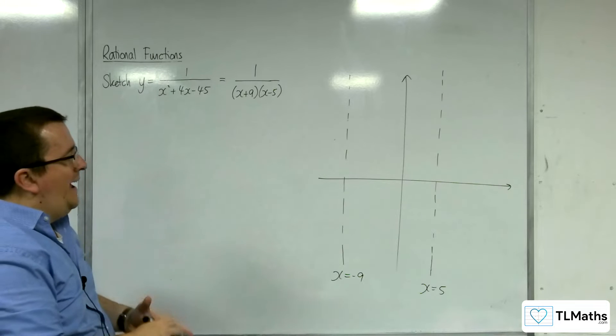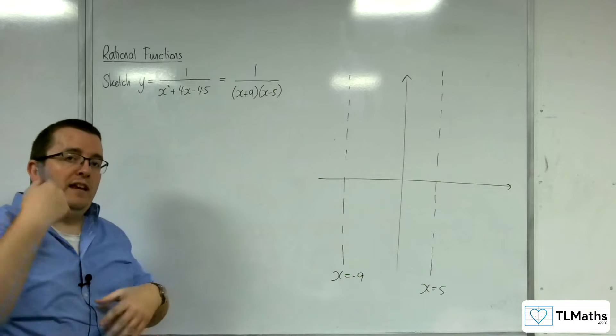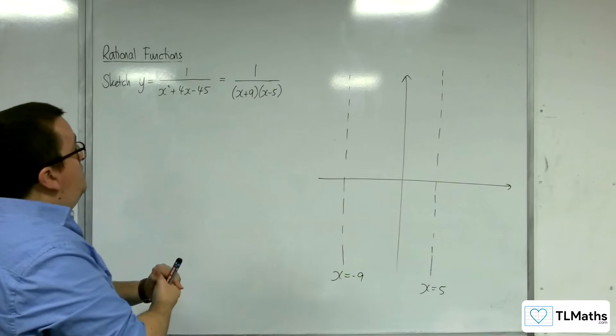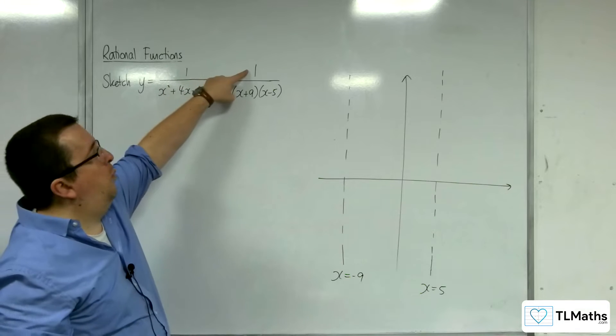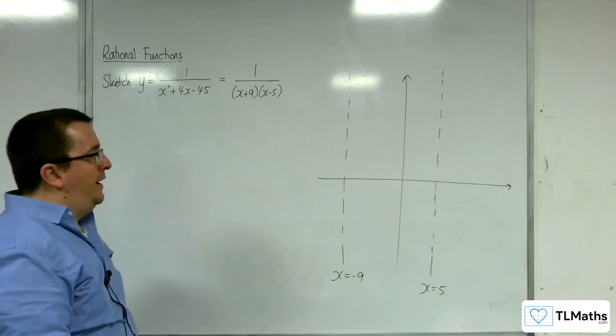Right, how about where it crosses the x-axis? Well, that would need y to be 0. That's when the numerator is 0, but the numerator is 1, which can never be 0, so it won't cross the x-axis.